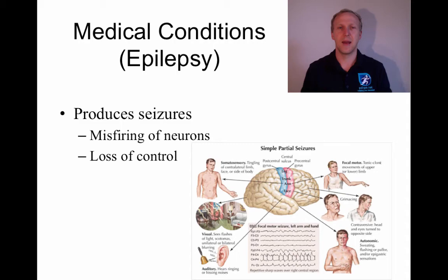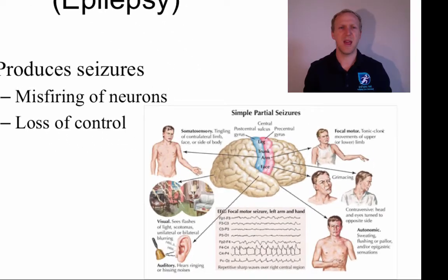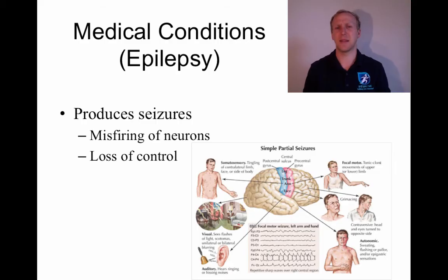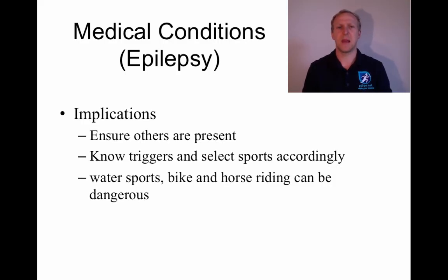The next medical condition is epilepsy — a condition in the brain where neurons misfire, causing the person to lose control of their body for a period of time. This can be very obvious, such as waving arms or shaking, or very non-obvious, like blacking out momentarily, or hearing or seeing things that aren't there. It's essentially a crossing over of wires in the brain causing the misfiring of neurons.